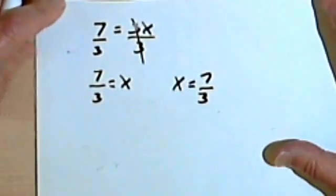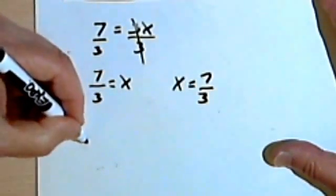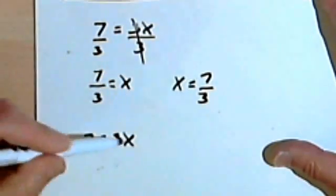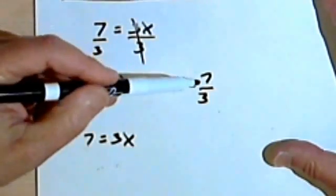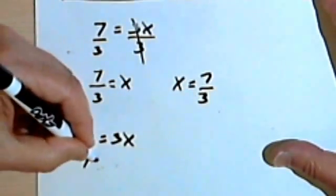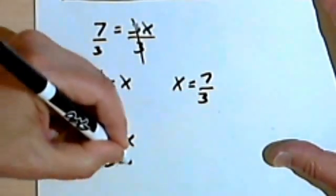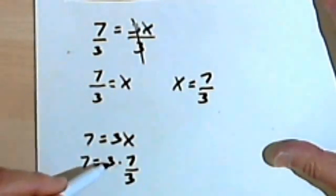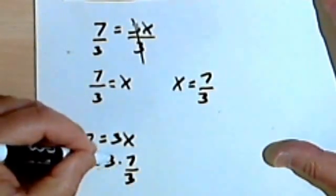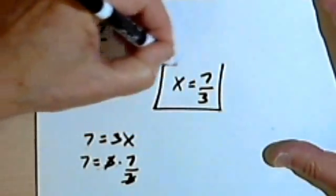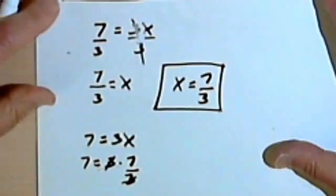To check my answer, I'm going to go back and write the original problem again. 7 equals 3x. Instead of the x, I'll put in what I believe my answer to be, 7 over 3. So 7 equals 3 times 7 over 3. Checking this, I can cancel out these two 3s. I get 7 equals 7. So my answer is correct.